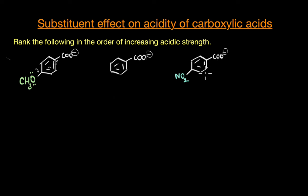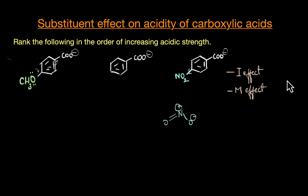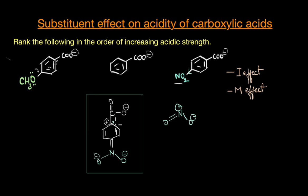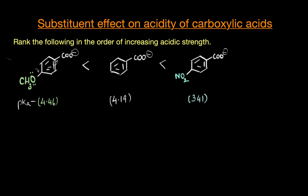For paranitrobenzoic acid, the nitro group is an electron withdrawing group both via inductive effect and through resonance. The nitrogen in the nitro group carries a positive charge and withdraws electron density through sigma bonds, giving a minus I effect. Since the nitro group is at the para position, the inductive effect is relatively insignificant, but the strong minus M effect is not. The nitro group draws electron density away from the benzene ring through resonance, and in one of the most stable resonance structures there is a positive charge adjacent to the COO⁻ group, which stabilizes the carboxylate ion. Because of this strong stabilizing effect, paranitrobenzoic acid has very high acidic strength.